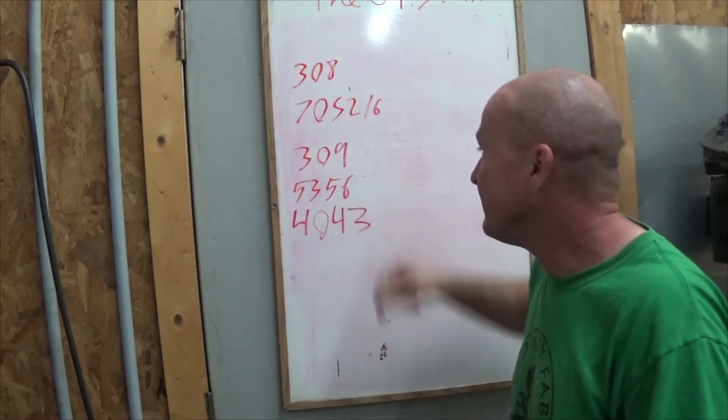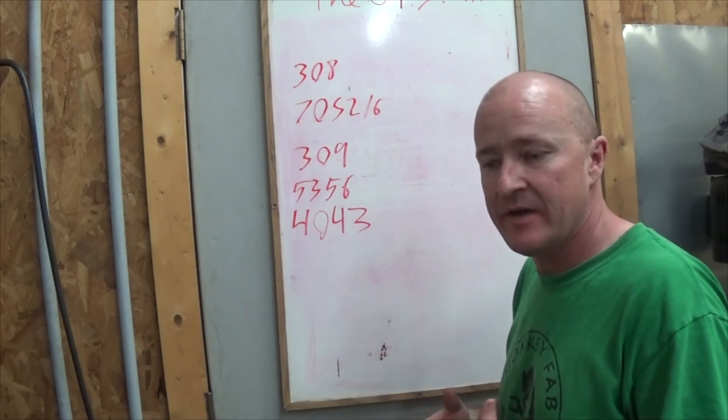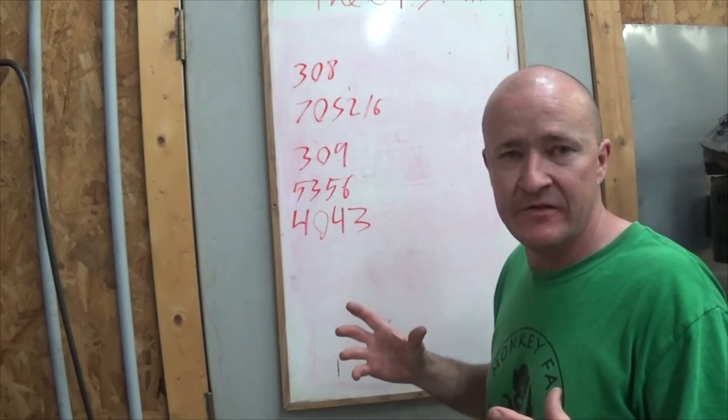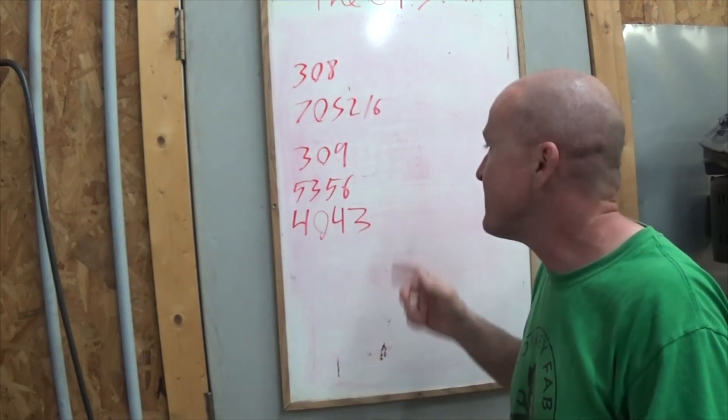309 is going to be the one you use when you're joining stainless steel with mild steel. So a lot of times you'll have a mild steel flange and you want to hold stainless steel pipes to it, that's what you're going to use is the 309.